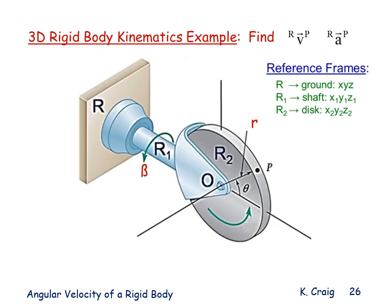Here is a 3D rigid body kinematics example. R is the ground reference frame. R1 is a shaft with simple angular velocity with respect to R. Attached to the shaft is a clevis to which a disc is mounted. The disc is the R2 reference frame and has simple angular velocity in R1. The task is to find the absolute velocity of point P (a point on the disc) in R, and the absolute acceleration of P in R.